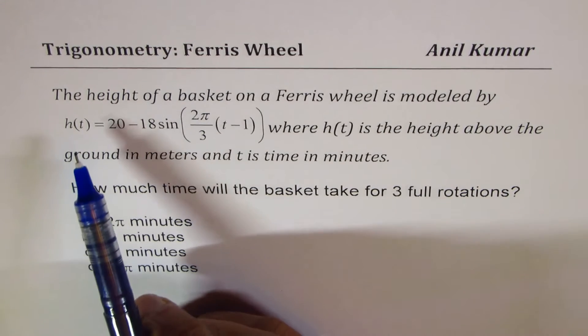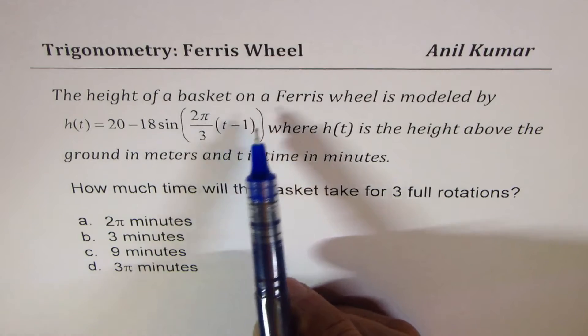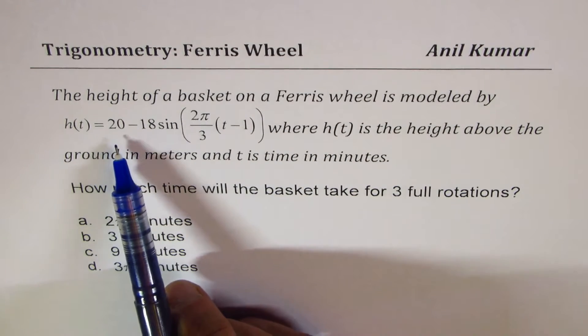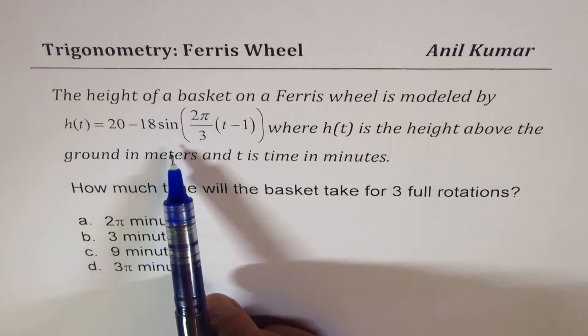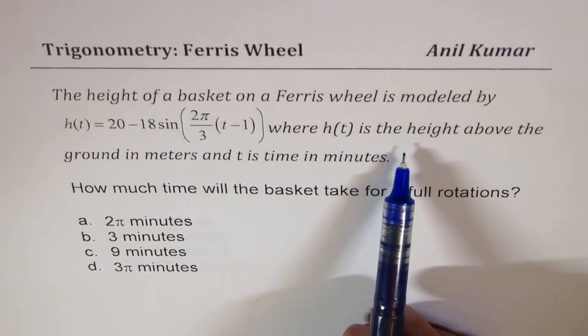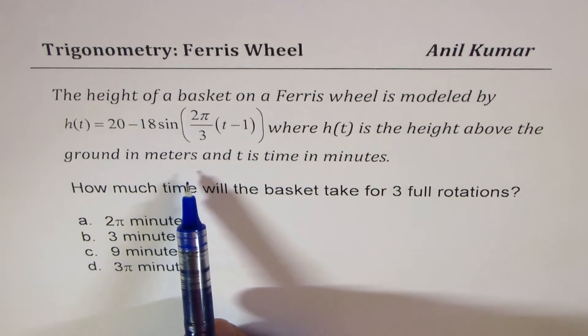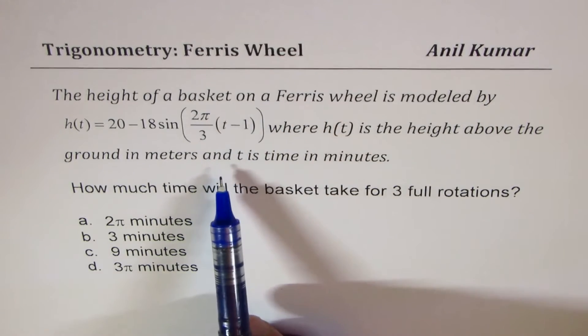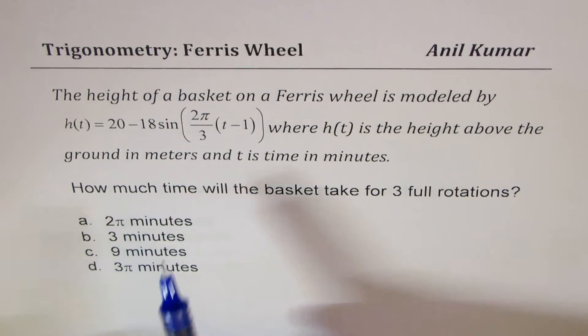The question here is, the height of a basket on a Ferris wheel is modeled by h(t) = 20 - 18sin(2π/3(t-1)), where h(t) is the height above the ground in meters and t is time in minutes. Based on this, we have seven different questions.